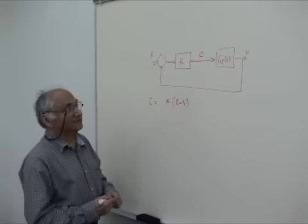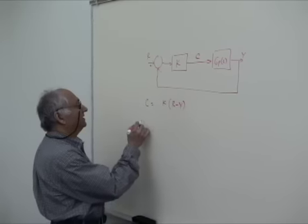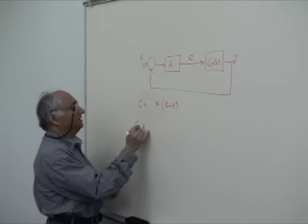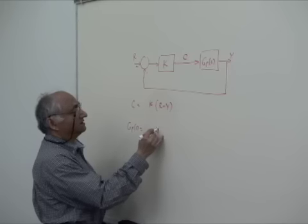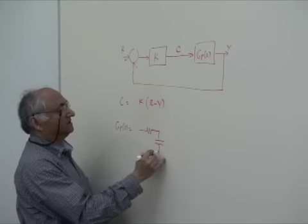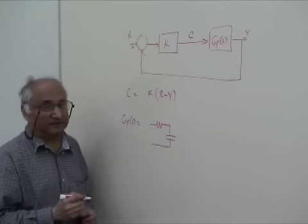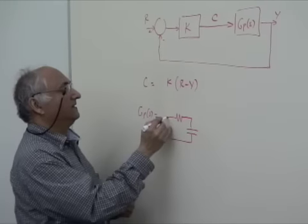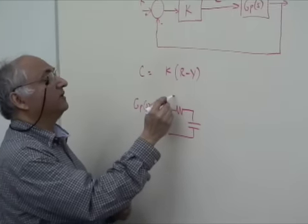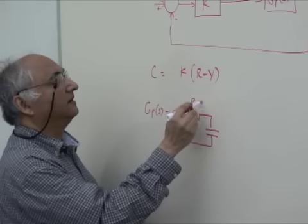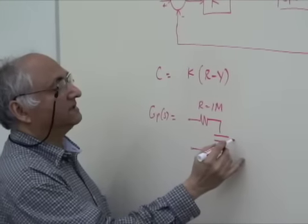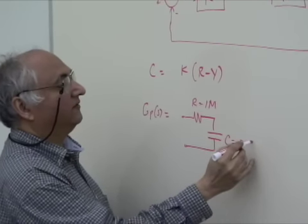For us now in our system, GP of S is really a first order RC system which is the same transfer function as a DC motor. Our R is 1 megaohm and our C is 0.1 microfarad.